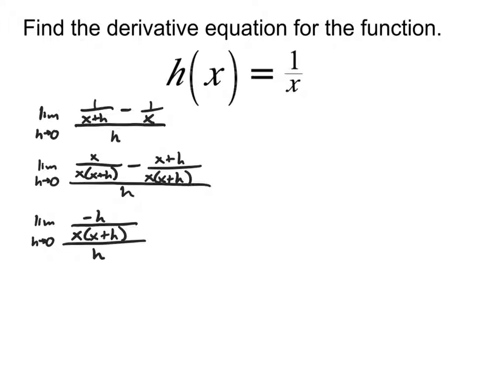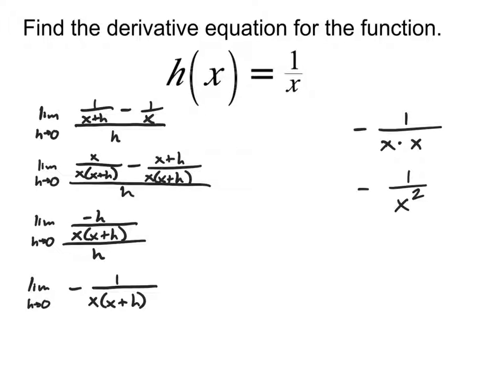Once we cancel out the h's, we have negative 1 over x times (x plus h). Now that the h's are canceled, we can try the substitution and plug zero in for h. Simplifying all the way down we get negative 1 over x squared. That is the derivative: h prime of x equals negative 1 over x squared — a nice tidy function that can be used to find the slope of the tangent line at any point of this function.